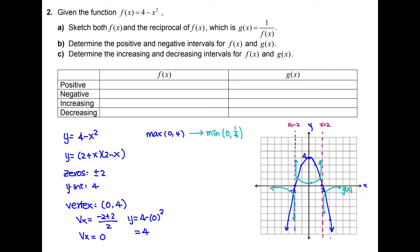Now let's use the graph to insert the positive and negative intervals. For f(x), the blue parabola, the positive region is from negative 2 to 2, and the negative region is negative infinity to negative 2 and 2 to positive infinity. For the reciprocal function g(x), the positive region is also from negative 2 to 2, and the negative region is from negative infinity to negative 2 and from 2 to positive infinity.